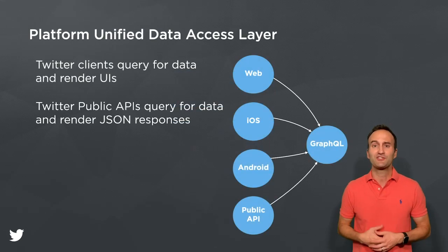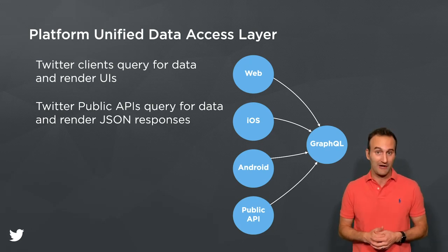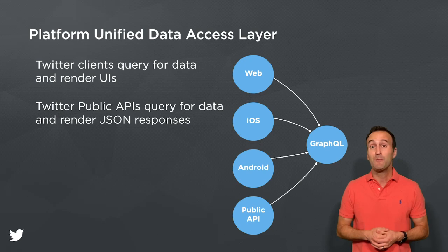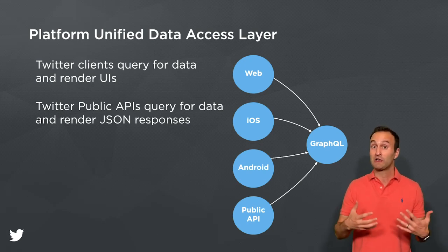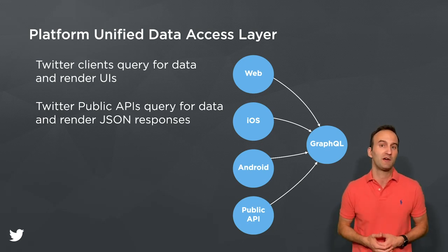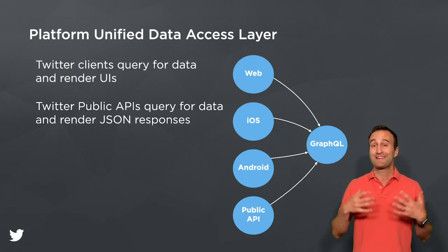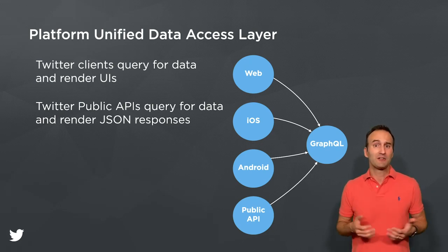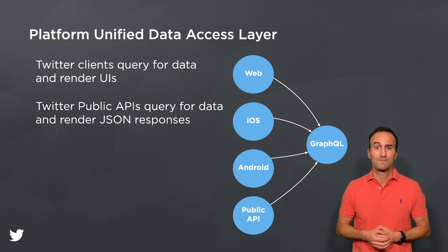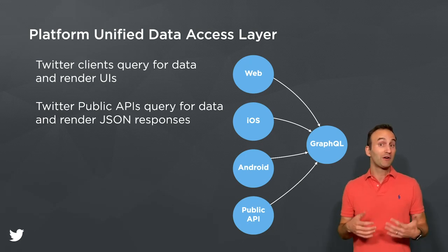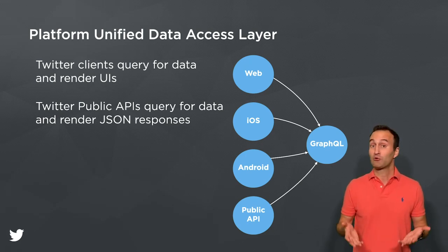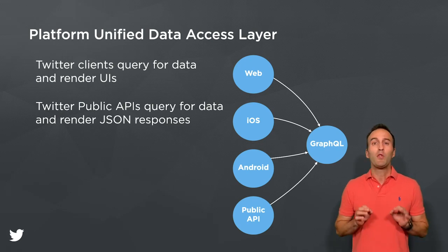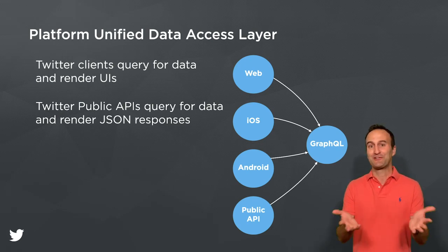As we discussed earlier, in 2017 our Twitter applications began using an internal-only GraphQL API, and this momentum built throughout 2019 when migrations to GraphQL started to happen across the company. Our team followed suit as we realized that the data querying needs of the public Twitter API are similar to the needs of our Twitter mobile and desktop clients — Twitter clients query for data and render UIs, while the public Twitter API queries for data and renders JSON.